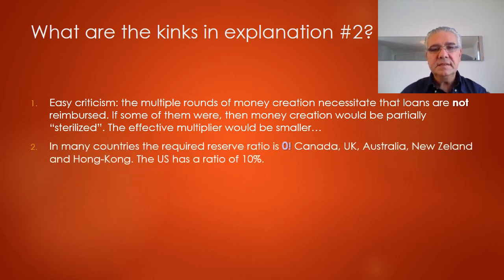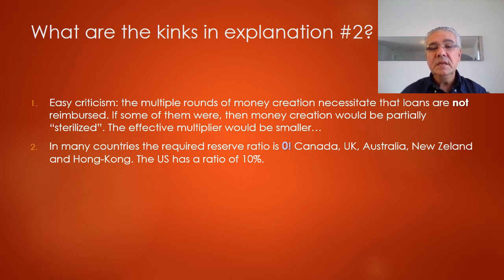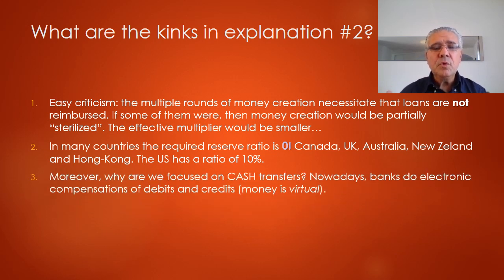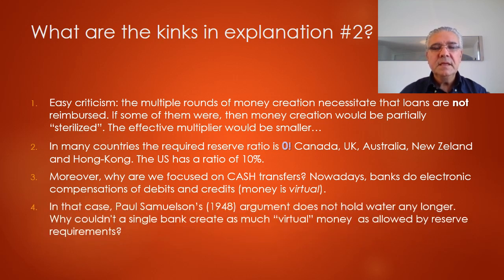Another potential kink is that in many countries the required reserve ratio is zero — this is the case in Canada, the UK, Australia, New Zealand, and Hong Kong. If that's the case, banks could potentially create an unlimited amount of money. Furthermore, why are we focused solely on cash transfers? Nowadays banks conduct compensations of their transactions using electronic accounting entries of debits and credits, so money is actually virtual — and in that case, Paul Samuelson's argument doesn't really hold water any longer.